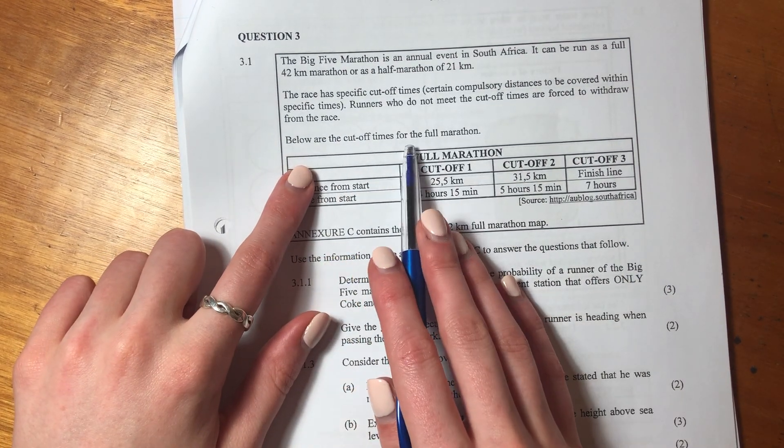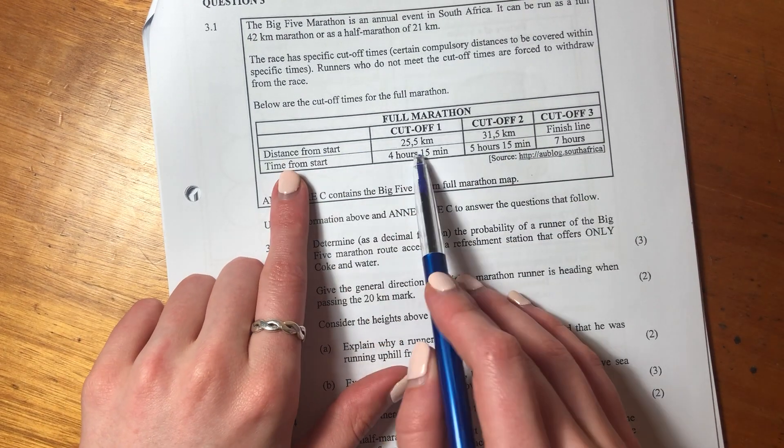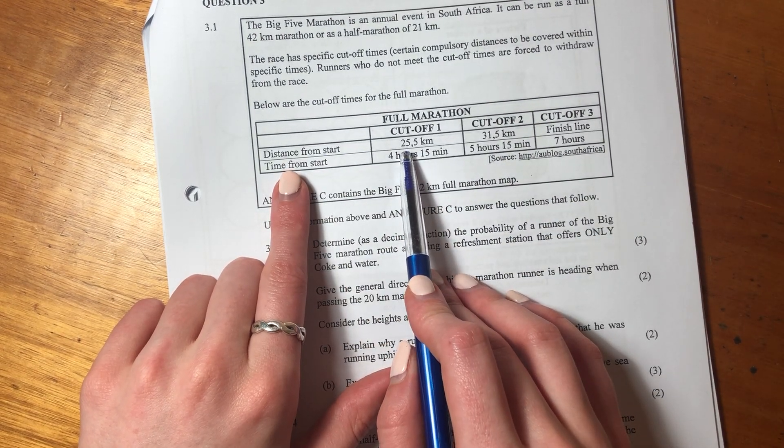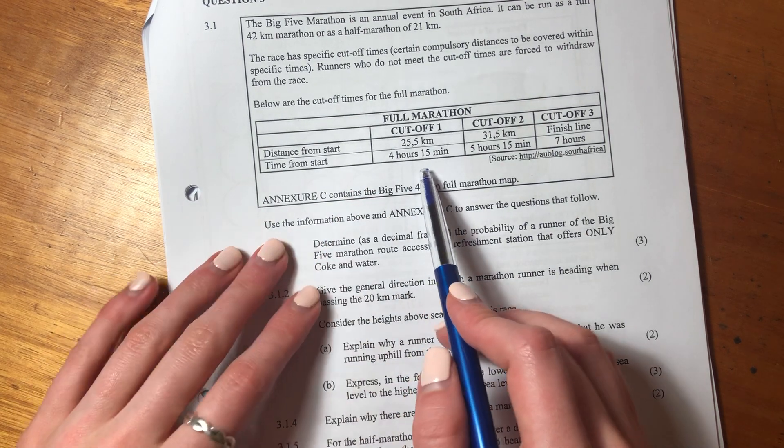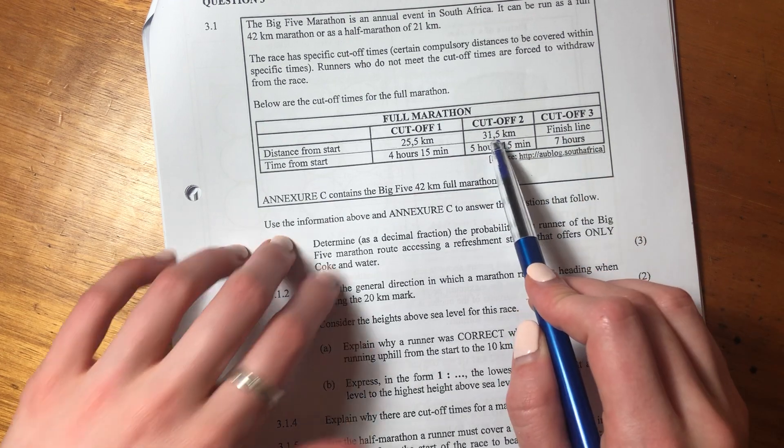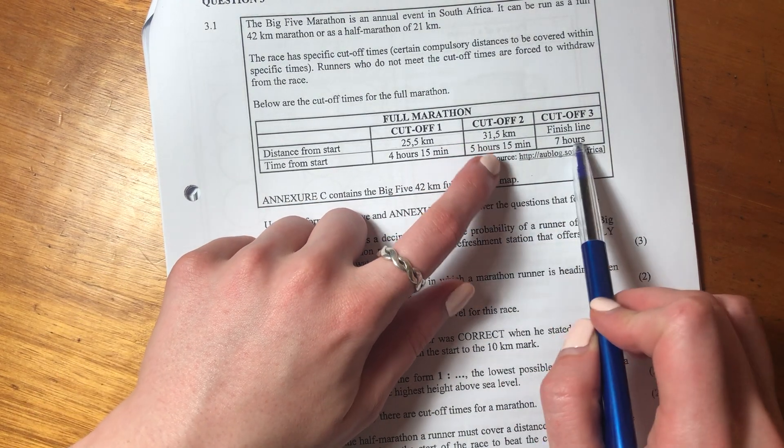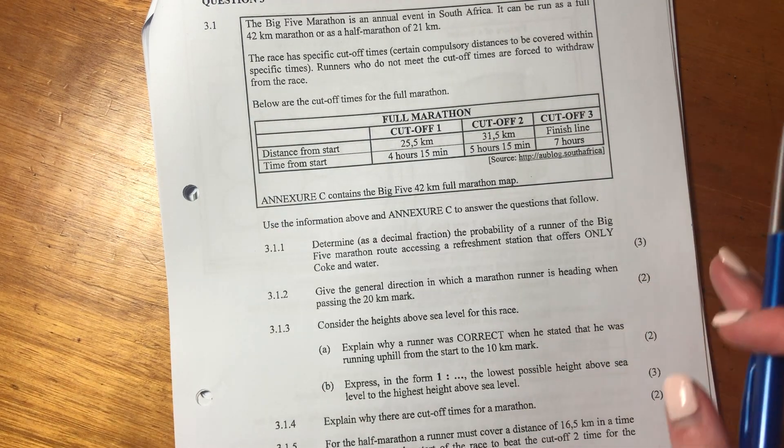Below are the cutoff times for the full marathon. So the full marathon basically says you have to get to 25.5 kilometers in four hours and 15 minutes, otherwise you're going to be chucked out the race. And it does it for the different distances as well. So it's saying you get a total of seven hours to do the marathon.